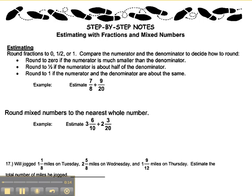For example, 7 eighths plus 9 twentieths. 7 eighths is close to having the entire whole, so 7 out of 8 is almost the whole thing. It will round to 1. 9 twentieths, 9 is about half of 20, so that 9 twentieths will round to 1 half. 1 plus 1 half equals 1 and 1 half.